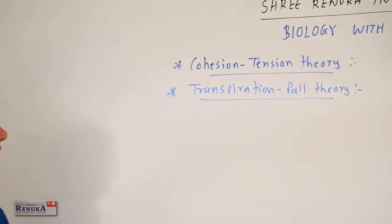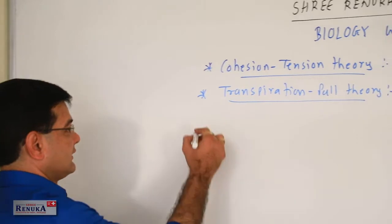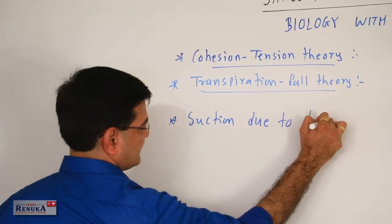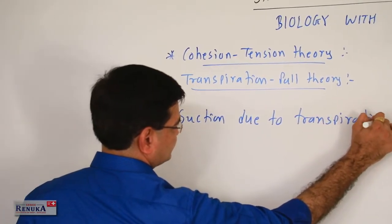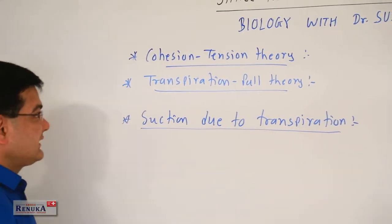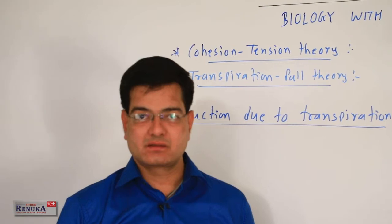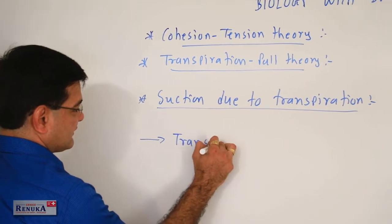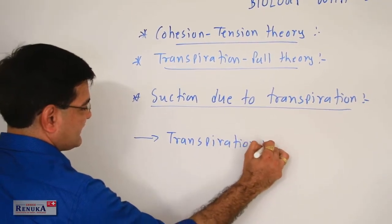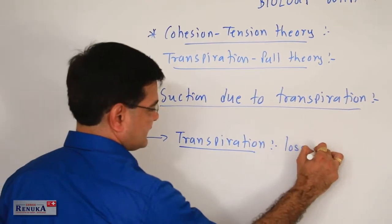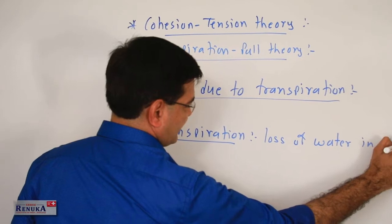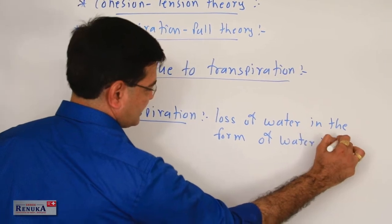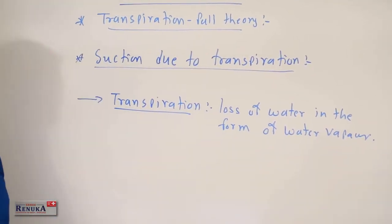The cohesion-tension theory, also known as the transpiration pull theory or suction due to transpiration, explains the ascent of sap in tall trees. The main factors involved are transpiration — that is, the loss of water in the form of water vapor by the aerial organs of the plant.